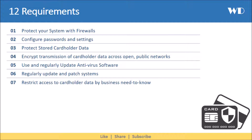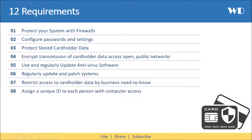The eighth requirement is to assign a unique ID to each person with computer access. The ability to identify individual users not only ensures that system access is limited to those with proper authorization, it also establishes an audit trail that can be analyzed following an incident. All users must be assigned a unique ID, managed according to specific guidelines. Controlled user authentication management should also be implemented, and two-factor authentication must be used for remote network access.